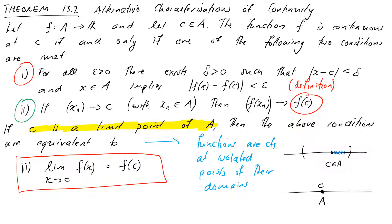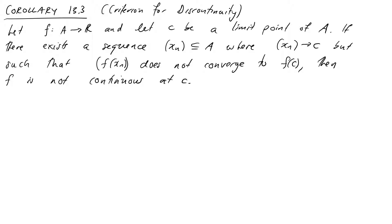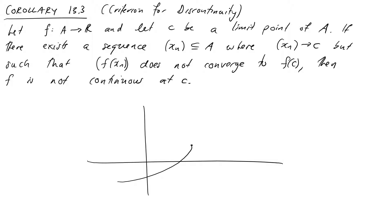When talking about continuity, we're always talking about continuity at a particular point. So if we want to show a function is continuous on some range of values, we need to demonstrate it's continuous at all points in that range. It's also worth noting that the sequence characterization is really useful for proving that something is discontinuous. Let's draw a function with a discontinuity in it, using our previous understanding.